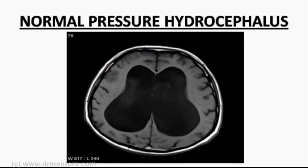The classical triad of normal pressure hydrocephalus includes ataxia, dementia, and urinary incontinence. A middle-aged patient will present with this triad, with the corresponding neuroimaging — this is classical of normal pressure hydrocephalus.